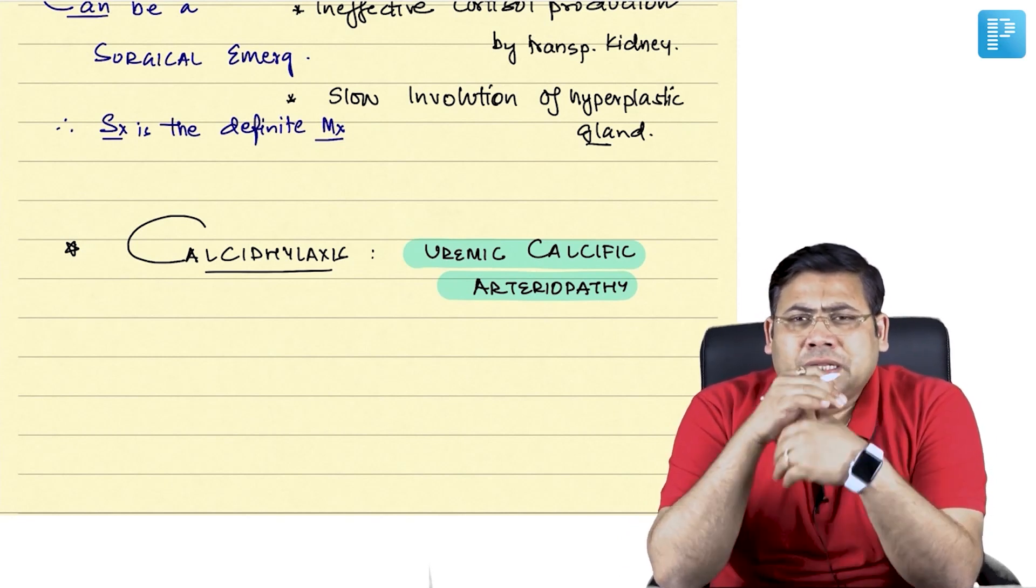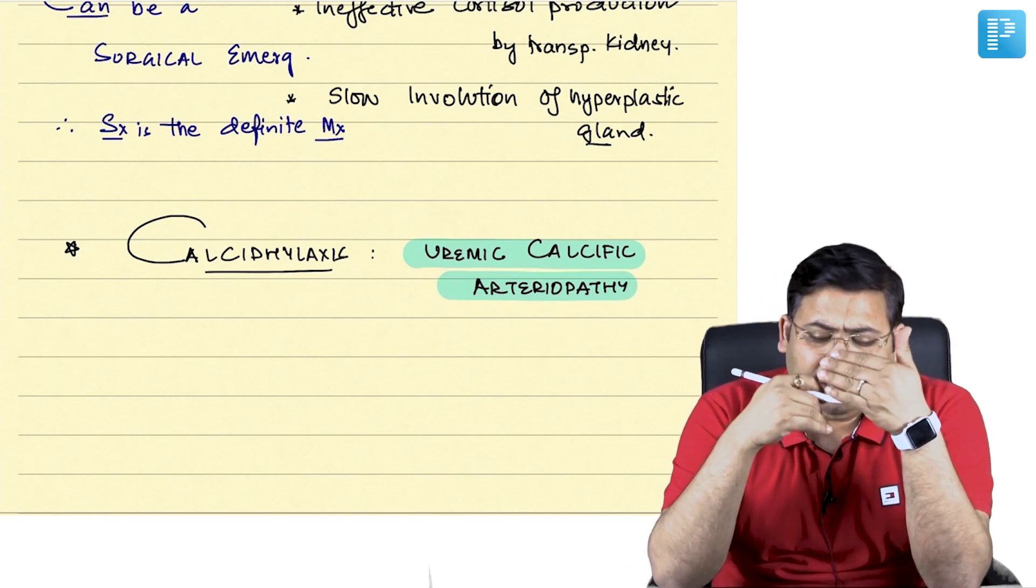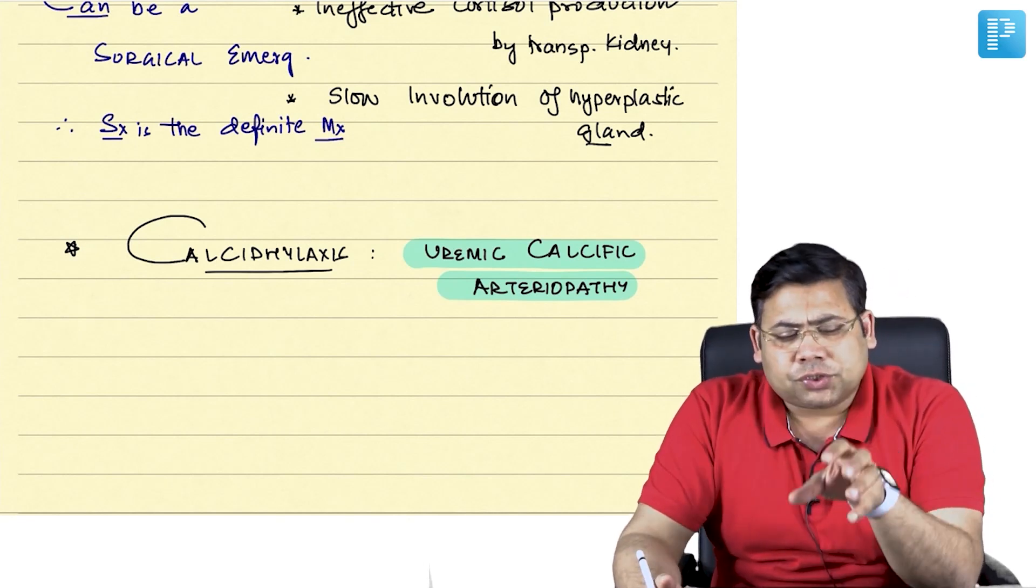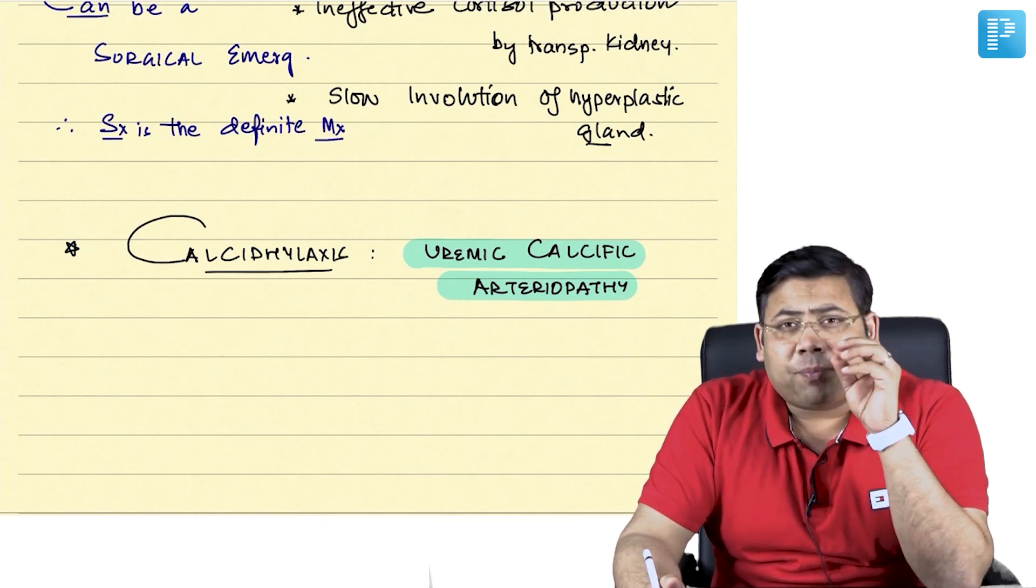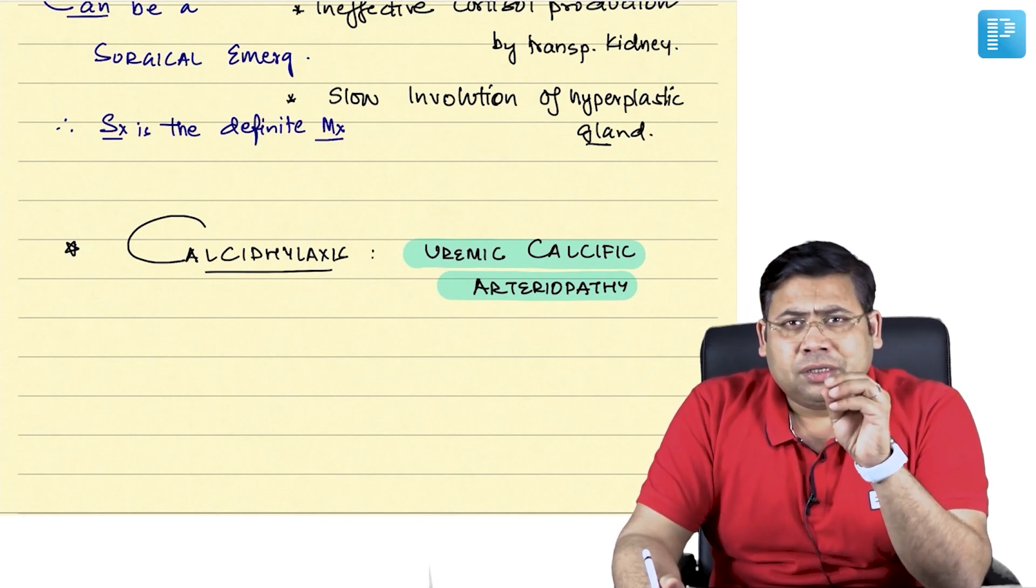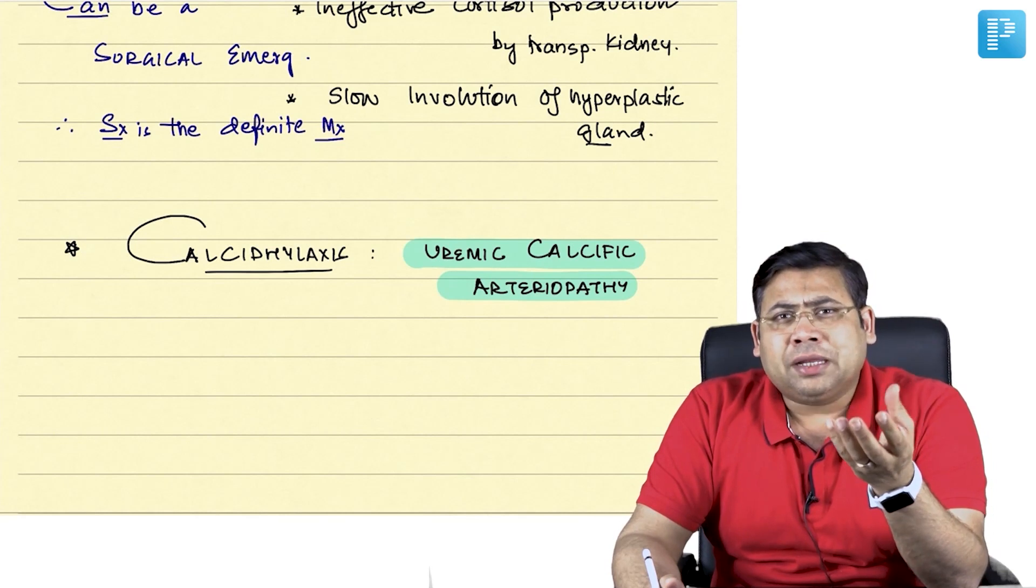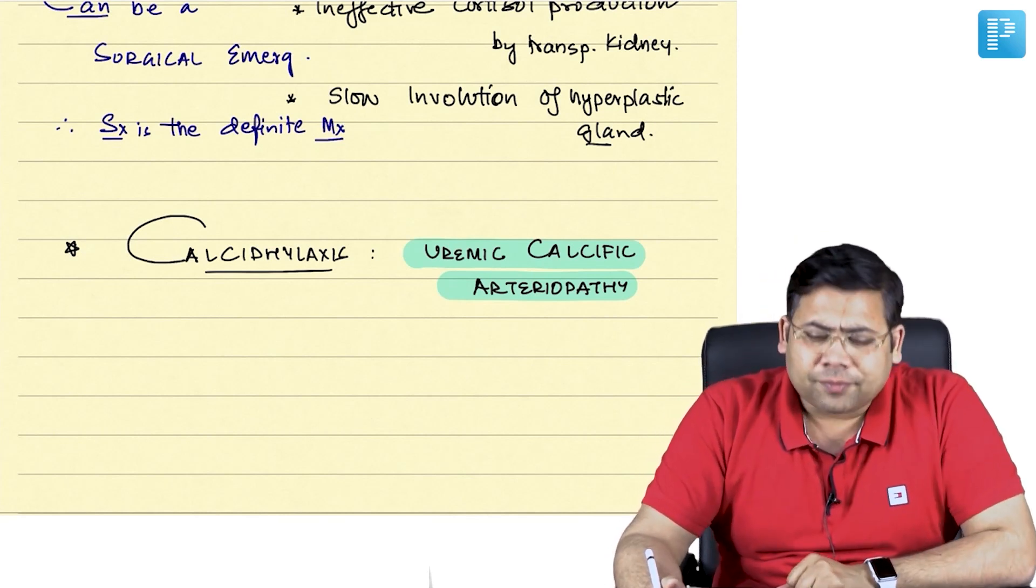So what happens? There are a lot of factors helping this calcific deposition into the vascular system which ultimately results in painful gangrenous lesion, and ultimately that is superseded by sepsis and hence mortality is very high.